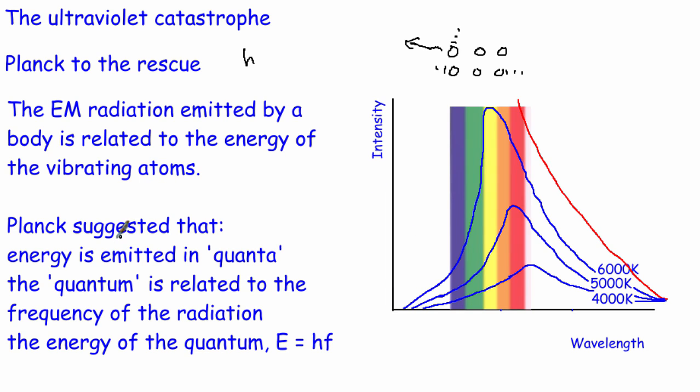Planck suggested that rather than this being a continuous thing, energy is actually emitted in quanta. This quantum of radiation, in other words bit of radiation, is related to the frequency of the radiation and the energy of the quantum is given by E = hf. Basically what Planck said is that rather than light being a continuous wave, it's actually made up of discrete parts. So basically it's made up of photons, although he didn't call them photons. Einstein did quite a lot later.